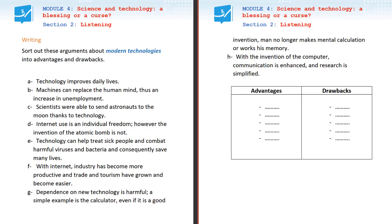Let's start with sorting out some arguments about modern technologies into advantages and drawbacks in this table. So here we are going to classify them — benefits and drawbacks. Let's start with reading the ideas.